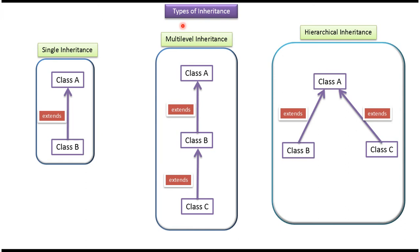Hi, in this video tutorial I will cover Types of Inheritance. The first one is Single Inheritance, which involves two classes. Here you can see the example: Class B extends Class A.